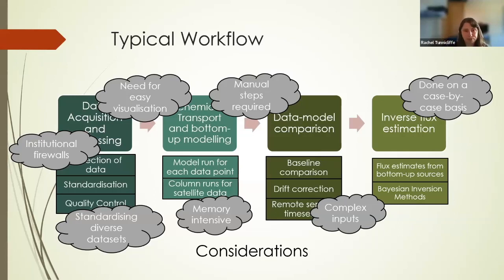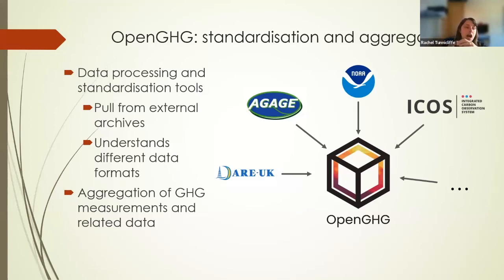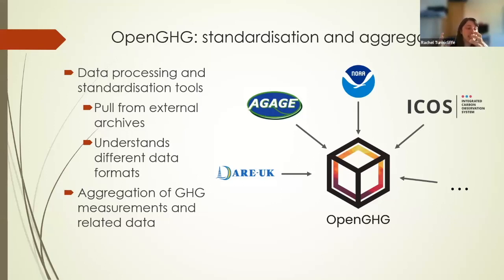What we've basically done is think of a good way to address these challenges and pull together this methodology — that's the basis behind OpenGHG. We've characterized this as two parts: standardization and pulling together different data sources with prior knowledge of how to interpret them. There are global networks, regional networks like the DECC network here at Bristol, and different internal standards. We've also built tools to pull from external archives like the CEDA Archive and the ICOS Carbon Portal — not to store the data ourselves, but to allow people to compare it.